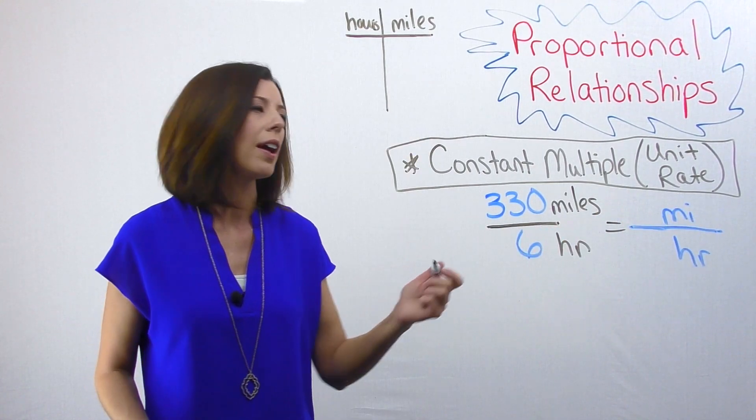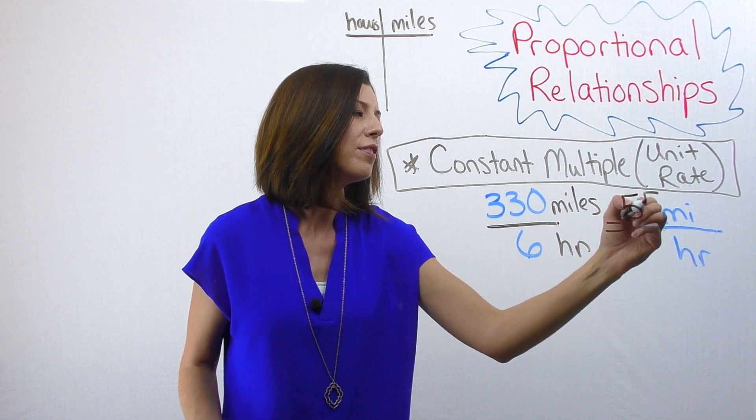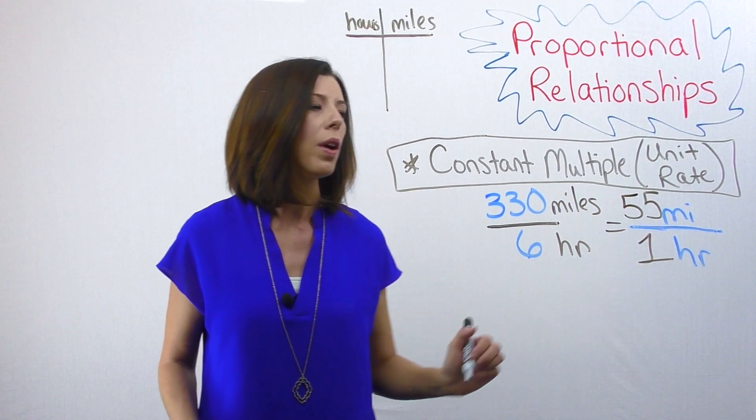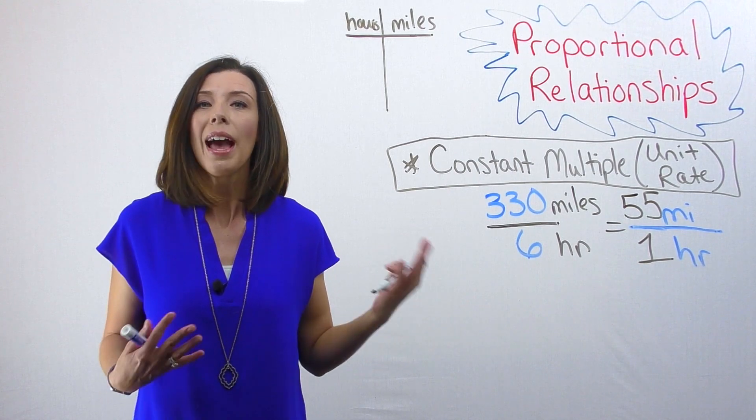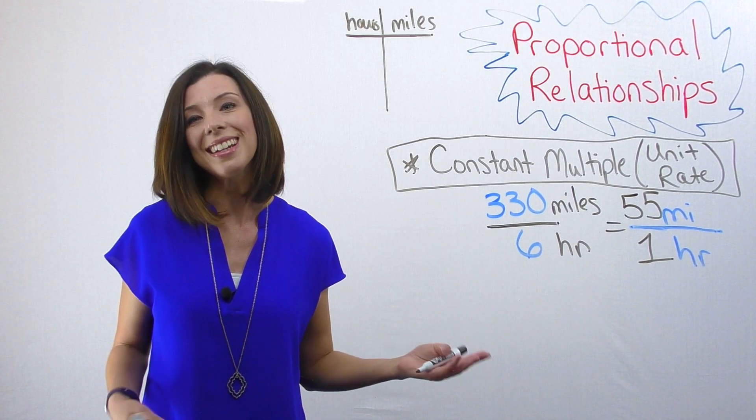When I do my math, I figure out I'm actually driving 55 miles in one hour. Now I can use that to figure out how many miles I can go in 18 hours.